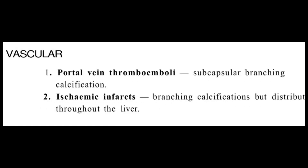A very rare differential for liver calcification includes vascular causes — specifically portal vein thromboembolism. Intrauterine examination may not confirm portal vein thromboembolism, but in neonatal examination you might come across it, which ultimately leads to calcific foci visible within the liver parenchyma. In ischemic infarct, there is also a possibility of calcification within the liver — whether a segmental or lobular infarct — and in either case you might see calcific foci within the liver parenchyma.